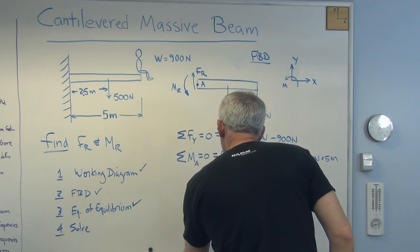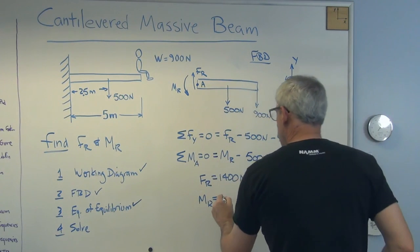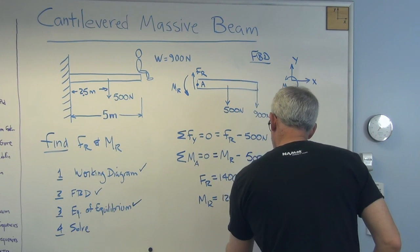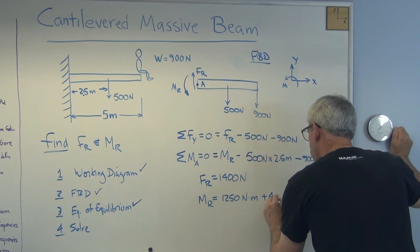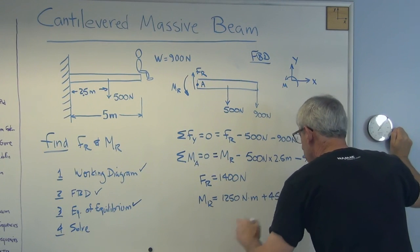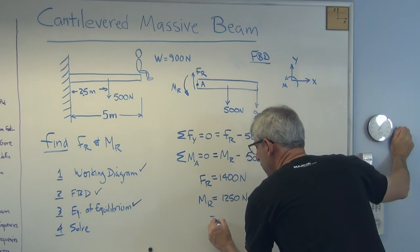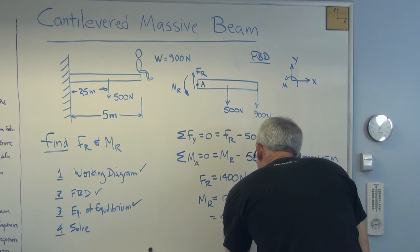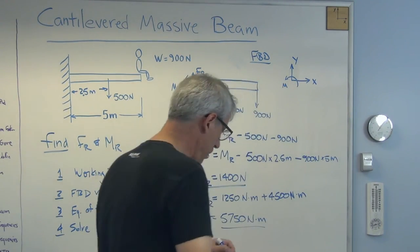The last thing we need now is this. If that all has to equal zero, this is going to be 1,250 newton meters plus 4,500 newton meters, and that equals 5,750. So I'll maybe underline that. So there you go.